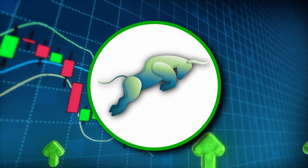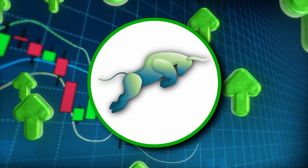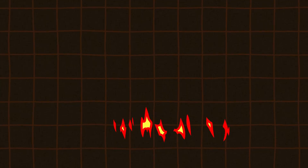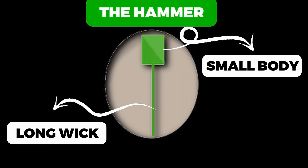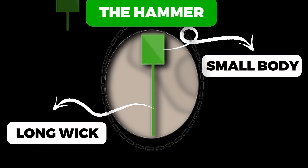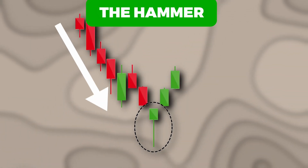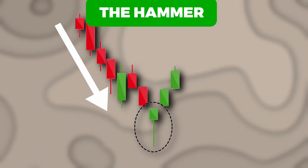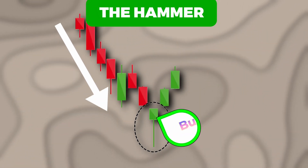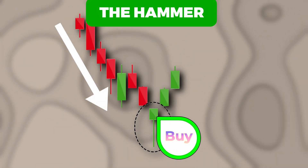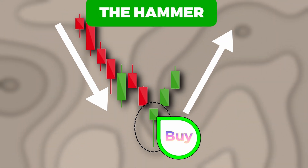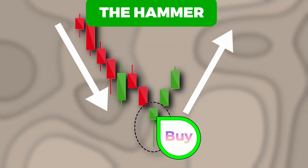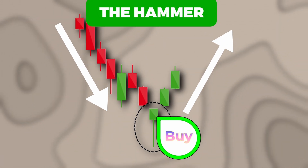The hammer pattern is identified by a small body with a long lower wick. It appears at the bottom of a downtrend. The long lower wick indicates that selling pressure was countered by strong buying, pushing the price back up. If the body is green, it's a stronger indication of a bullish reversal.